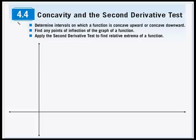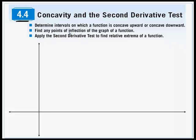In this section, 4-4 in the textbook, we're going to cover concavity and the second derivative test. The main points of this section are to determine intervals on which a function is concave up or concave down, find any points of inflection of the graph of the function, and apply the second derivative test to find relative extrema of a function.